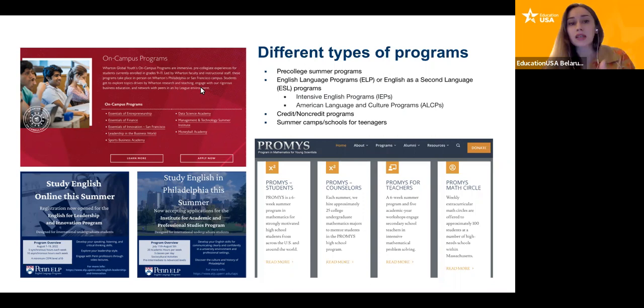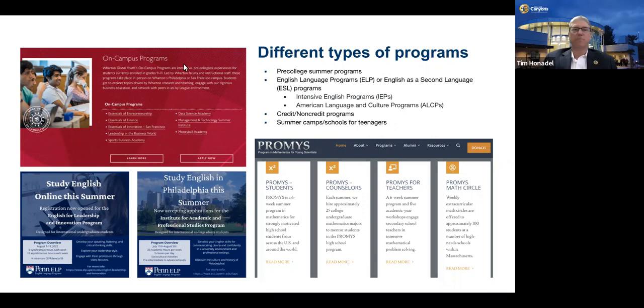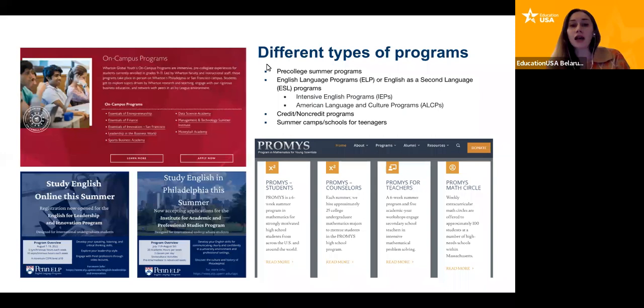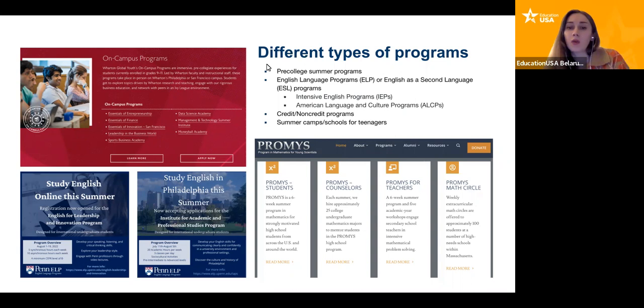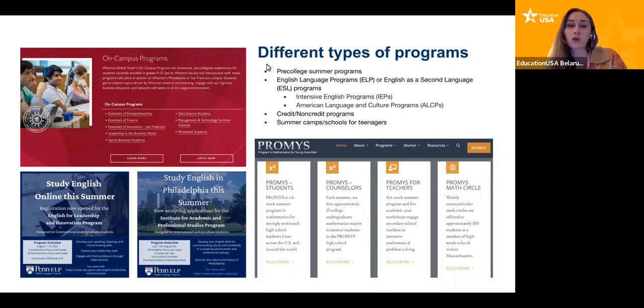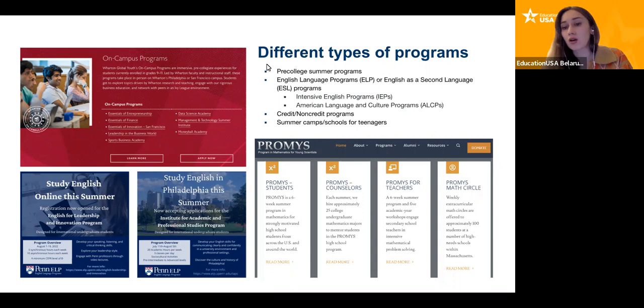You will see throughout my presentation some examples and screenshots of different programs you can find online. I would like to let you know that EducationUSA doesn't promote any specific institutions — we promote education in the US in general, and we want to encourage you to look broadly at your options, whether you're considering Ivy League schools, community colleges, public universities, or private universities. Just know that there are different options available for you. For example, you can see the MIT Promise program, which is one of the summer programs you can apply to if you want to prepare for studies at MIT.